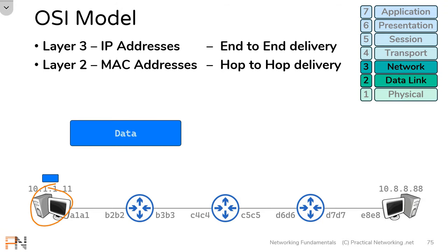IP addresses and MAC addresses function independently, but there is a protocol that ties them together. That protocol is known as the Address Resolution Protocol, or ARP. ARP links a Layer 3 address, like an IP address, to a Layer 2 address, like a MAC address. ARP is crucial to understanding how data flows through a network. We'll be talking about ARP later in this module, but there is also an article series available at pracnet.net/ARP if you'd like to learn more now.